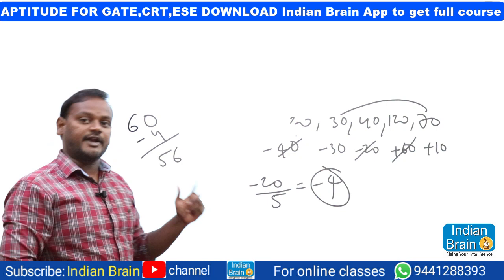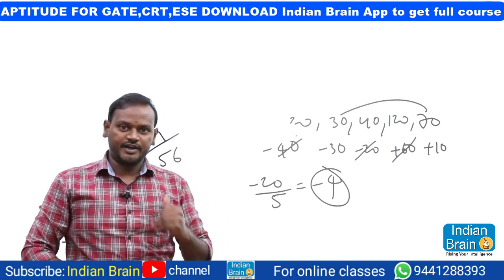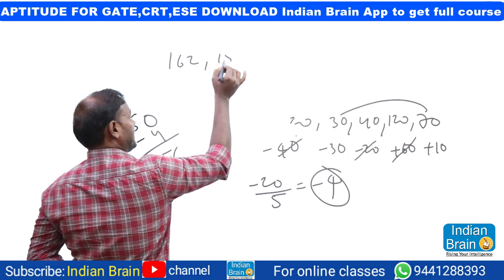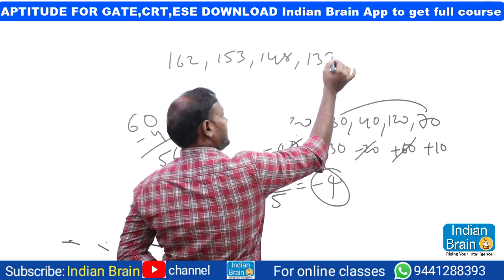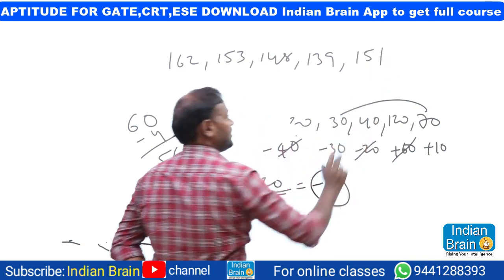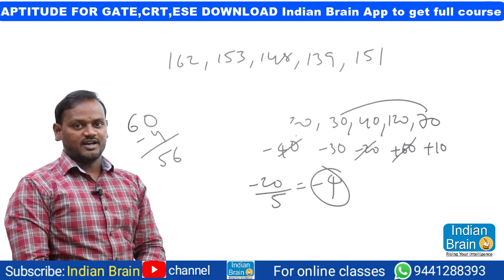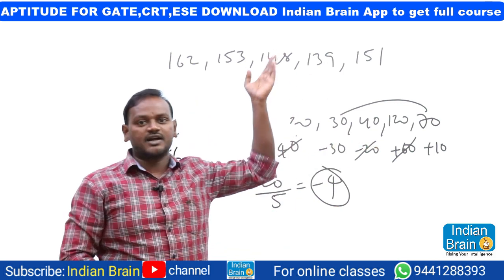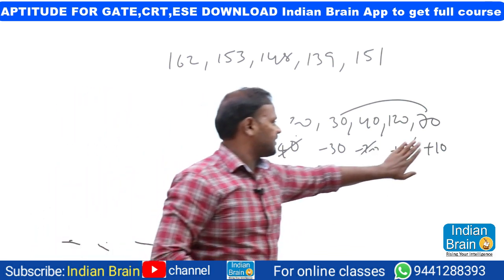The question is: 162, 153, 148, 139, 151 — find the average of these numbers. In this case it's a little difficult since the values are not round figures, so using the general calculation would be time-wasting.